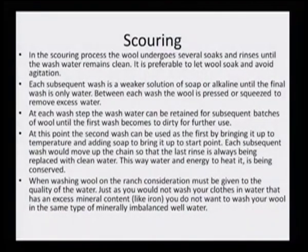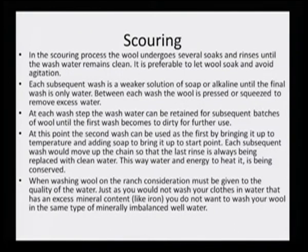It is not that one-time scouring can help. Every time a milder and milder soap should be used and finally a water wash is required. Each subsequent wash is a weaker solution of soap or alkaline until the final wash is only water. Each wash step's water can be retained for subsequent batches of wool. The second wash can be used as the first by bringing it up to temperature and adding soap. Each subsequent wash would move up the chain so that the last rinse is always being replaced with clean water — this way water and energy for heating are being conserved.